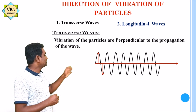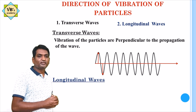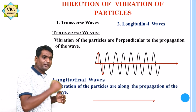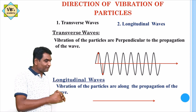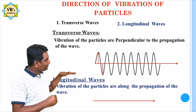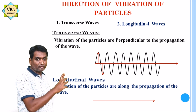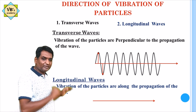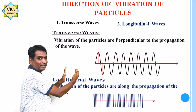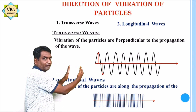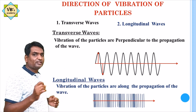In longitudinal waves, the vibration of the particles is along the propagation of the wave — meaning the direction of propagation and the direction of vibration are parallel to each other. The particles vibrate in the same direction, moving closer and then away, along the direction of wave propagation. Such waves are called longitudinal waves.